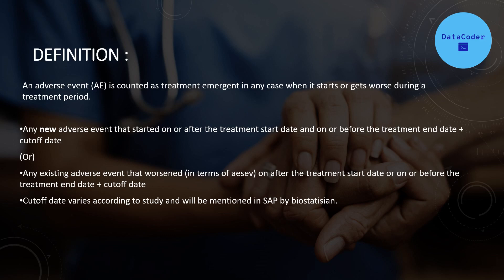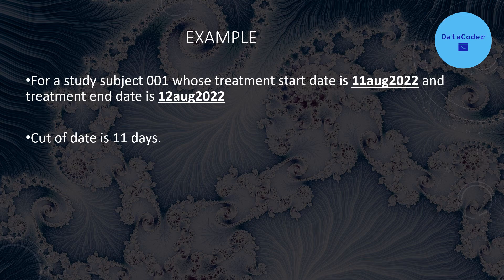The first definition says: if any adverse event started after the treatment was given to the subject, then it's a treatment emergent adverse event. The second definition covers any existing adverse event where, after the treatment, the severity has increased — that is also considered a treatment emergent adverse event.